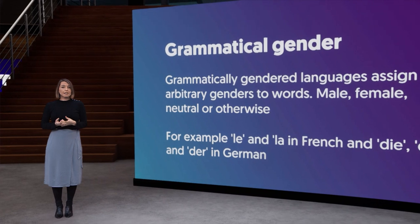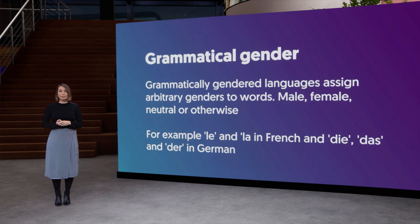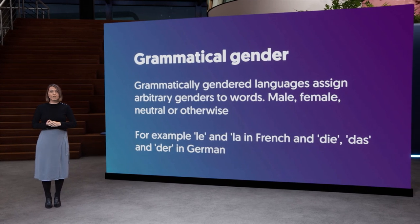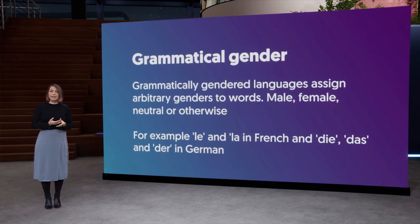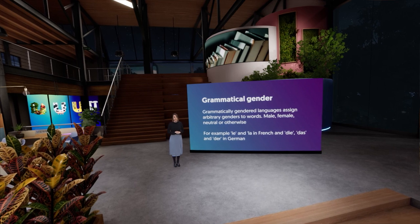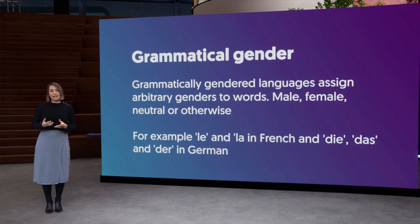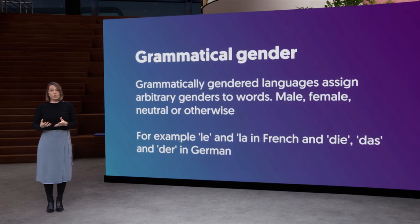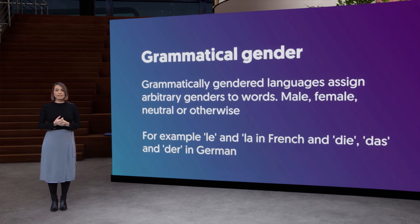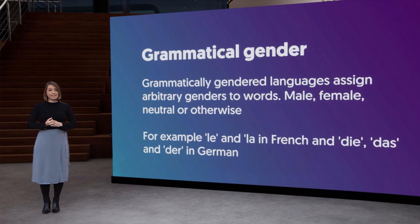Many languages, for instance, assign a so-called grammatical gender to all nouns. This can be male or female — think of le or la in French, for example. But there can also be three genders, for instance der, die and das in German. And other languages even have more than three genders. Swahili, for example, has more than 16 noun classes. And since linguists sometimes use the term grammatical gender and noun class interchangeably, Swahili can be considered a language with no less than 16 genders.